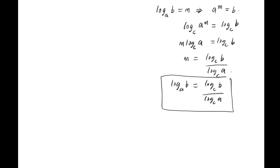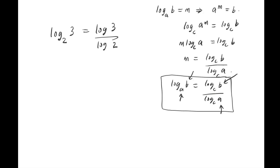The main thing is: the original number b stays on top, the original base a stays down, and you have a new base c on both sides. For example, if I have log base 2 of 3, I can write log 3 over log 2, introducing any new base — say, base 5 and 5. It doesn't change the value of the whole expression.